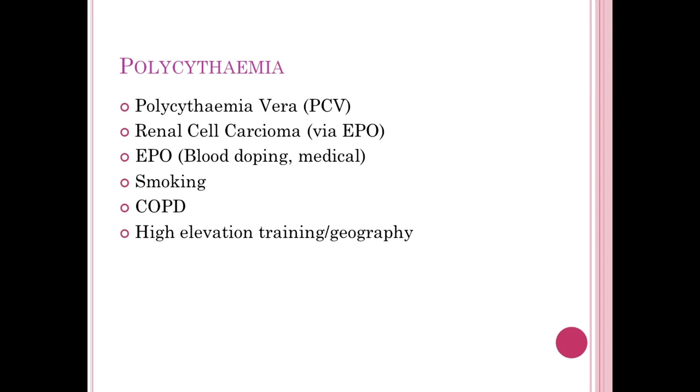Too high hemoglobin or too many red cells is called polycythemia — poly meaning many, cyte meaning cells, emia in the blood. Primary polycythemia vera is a primary bone marrow issue, usually driven by an acquired JAK2 mutation that drives excess red cell and hemoglobin production. This is problematic because it can slow blood flow and cause clots, requiring treatment. Secondary causes include renal cell carcinoma producing excess EPO, EPO doping in athletes, and smoking or COPD — both of which impair oxygen exchange, triggering the bone marrow to produce more red cells.